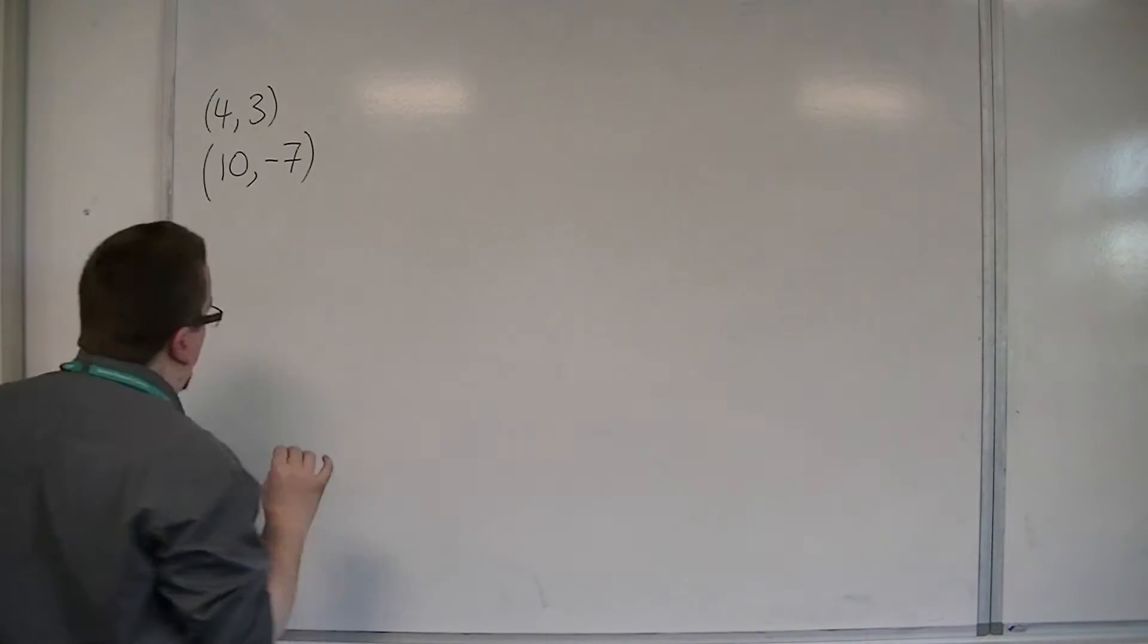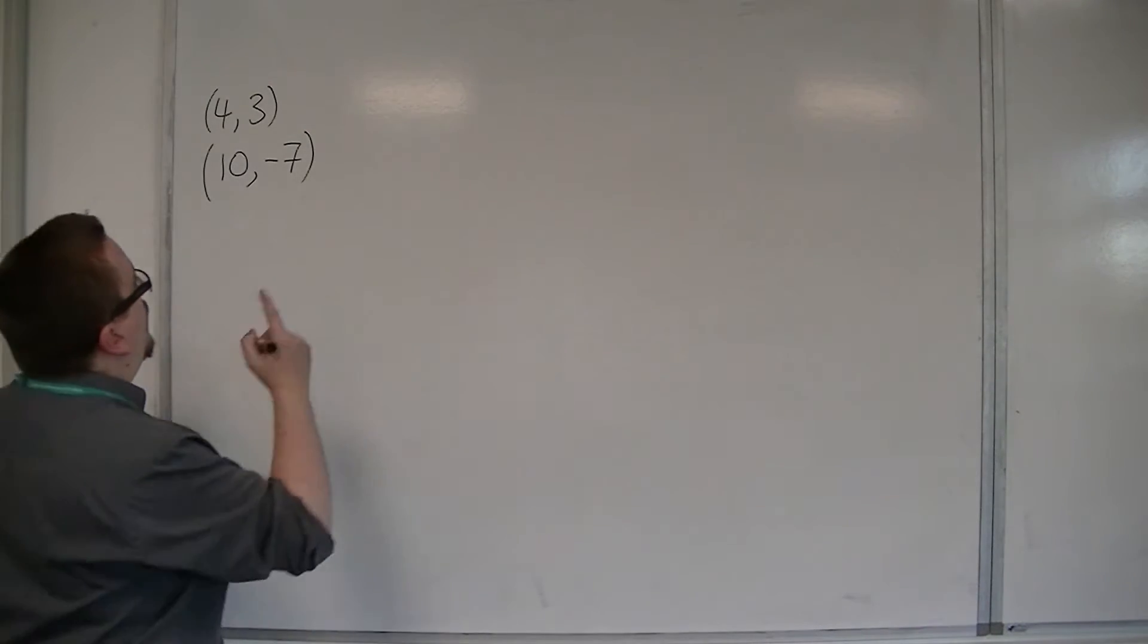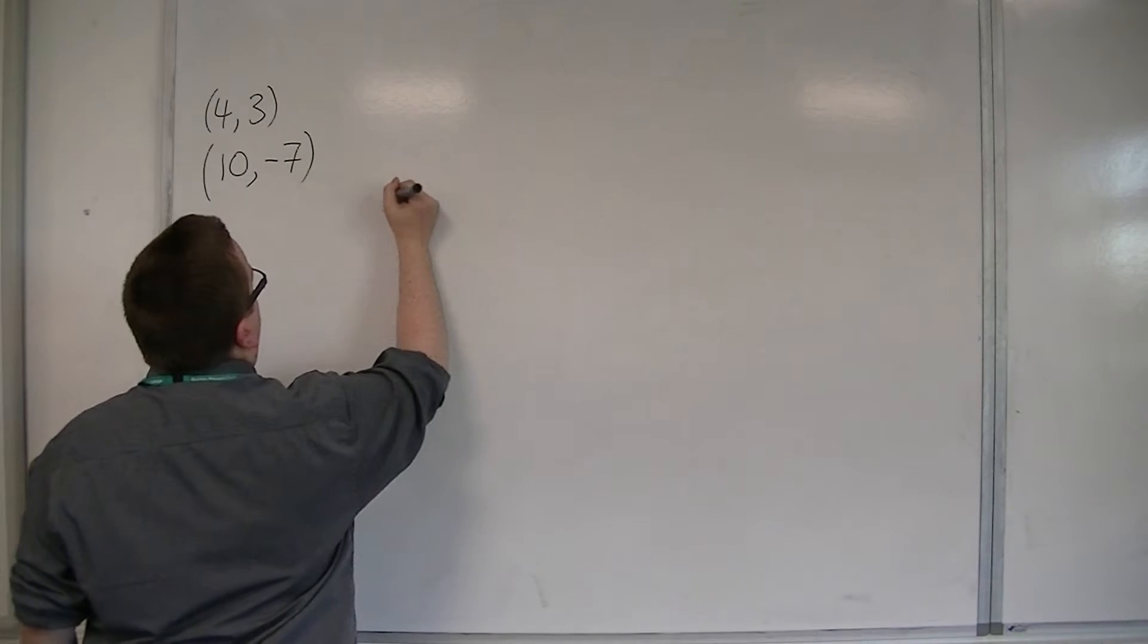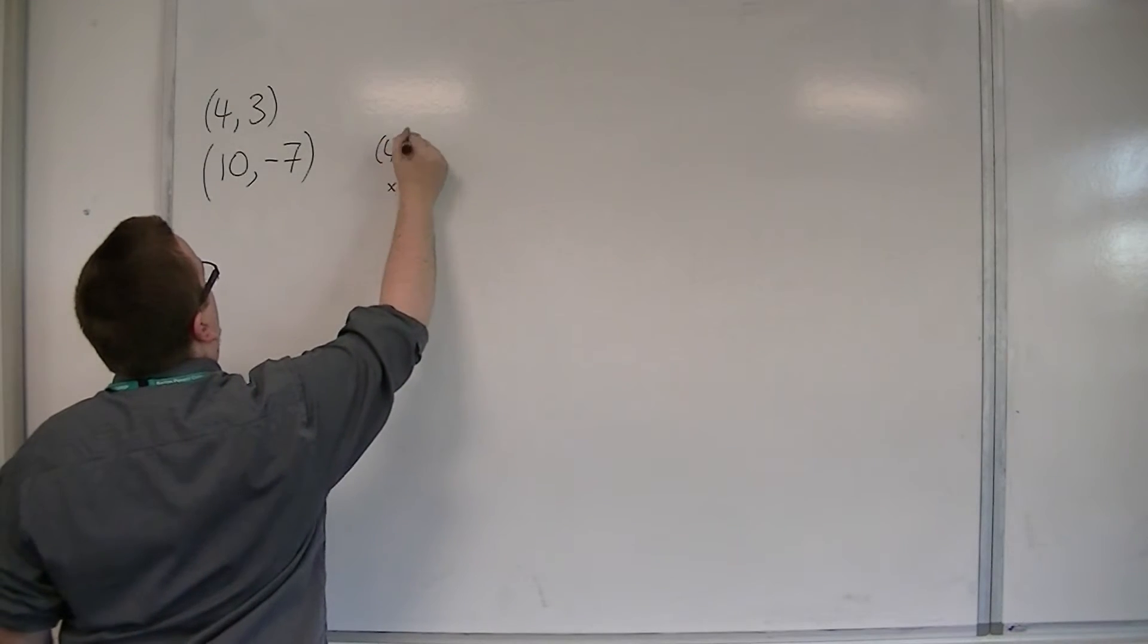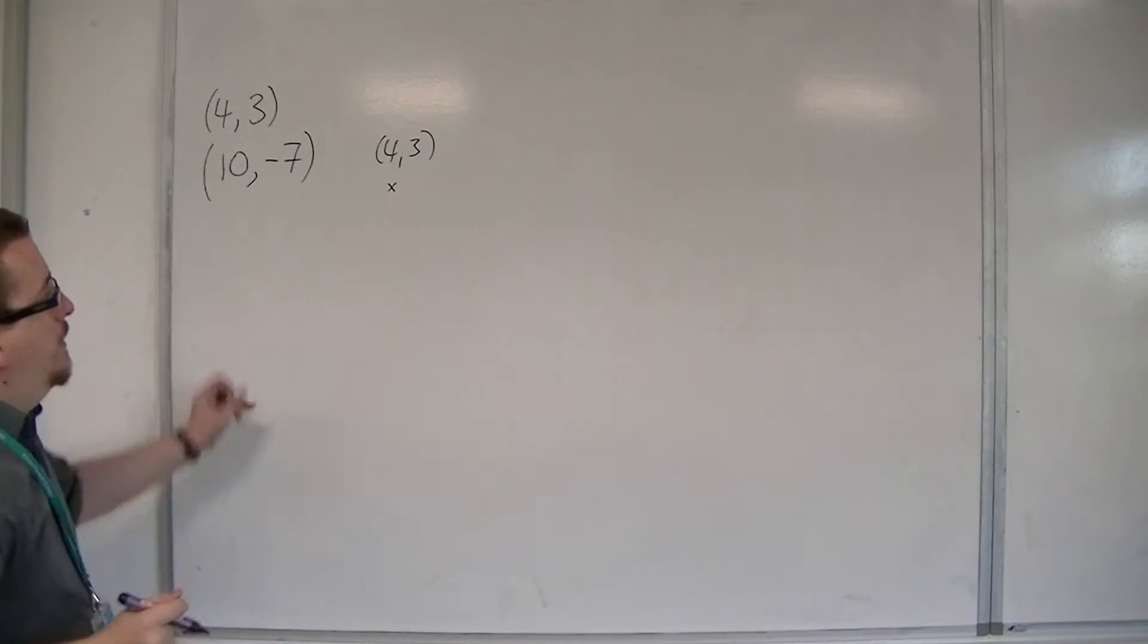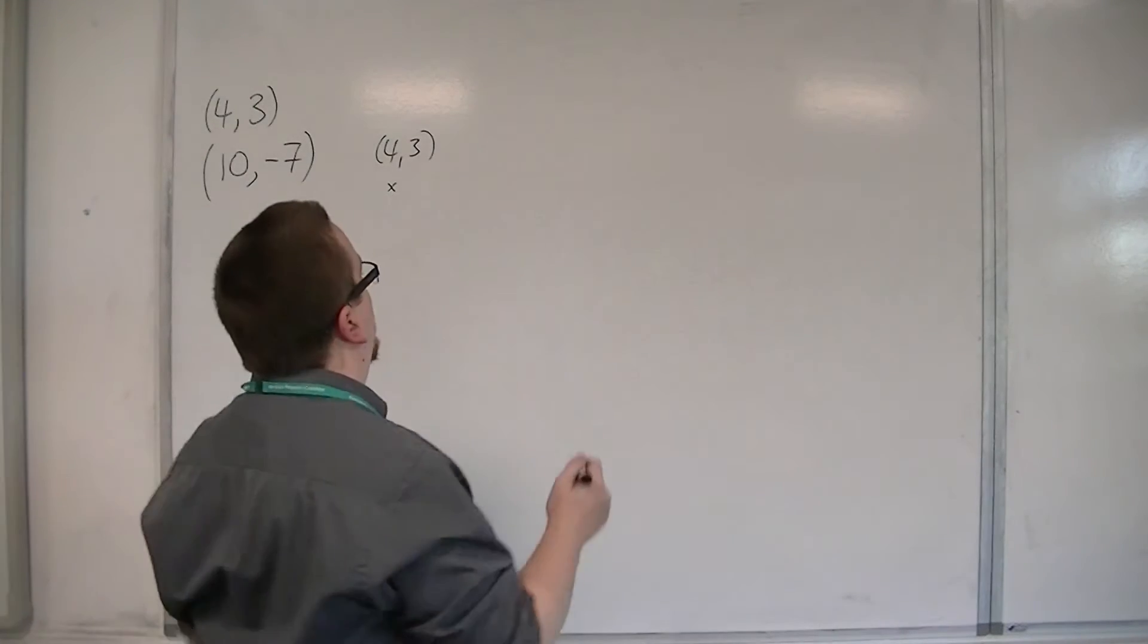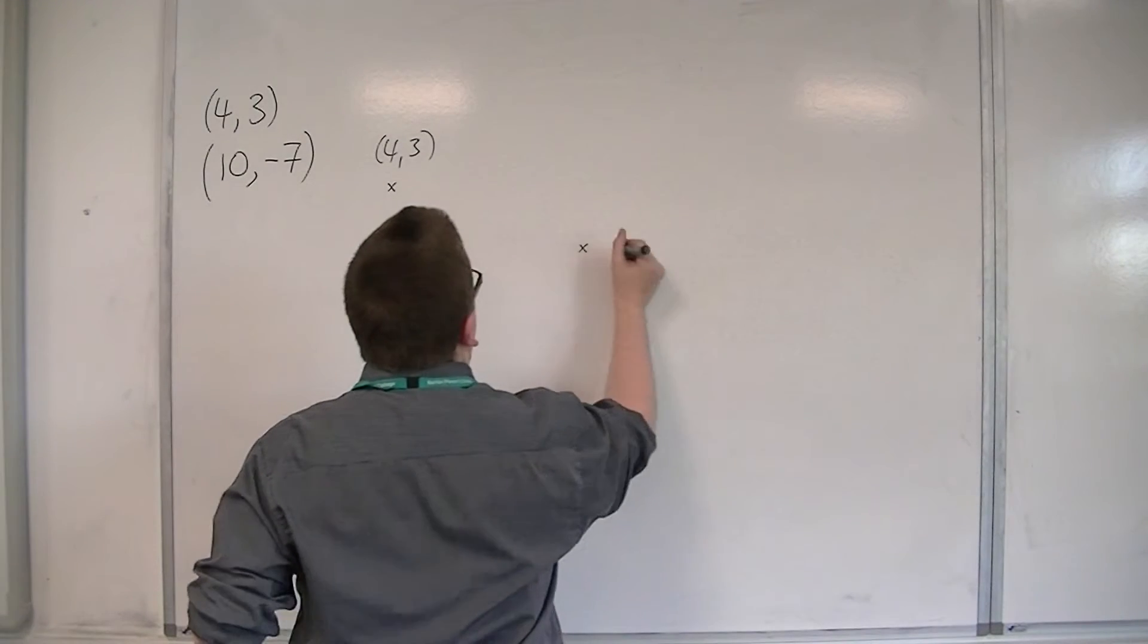Let's see this visually. The coordinates of 4, 3 are here. 10, minus 7 will be along and down, about there.